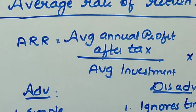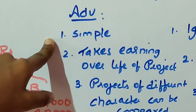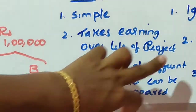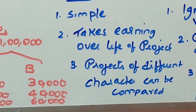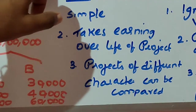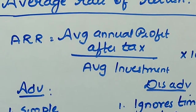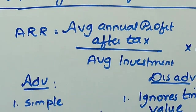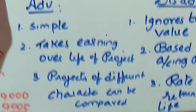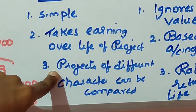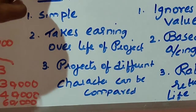The advantages of ARR: first, it is simple because all the information is taken from financial statements. Second, it takes earnings over the life of the project into consideration — unlike the first two traditional methods, under ARR the earnings or profitability of the project are considered before selecting. Third, when you have different projects to select from, this method is suitable because on the basis of profitability an organization can select the best project; projects of different character can be compared and the best one selected.